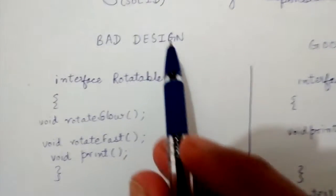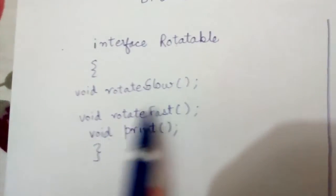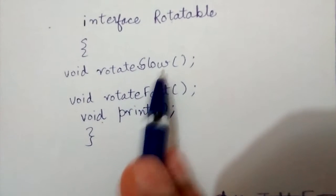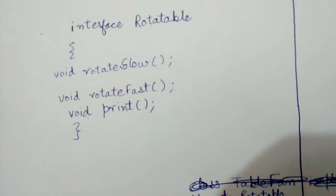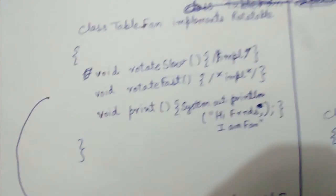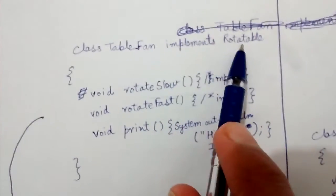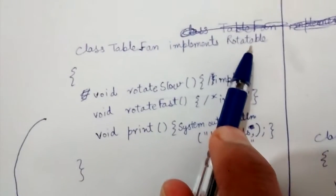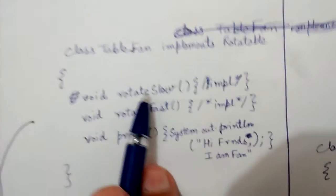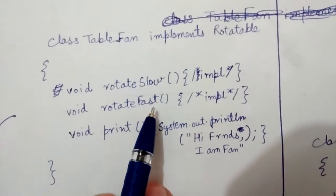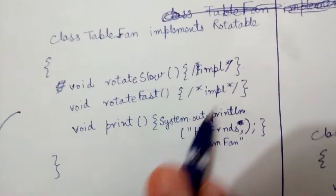So let's look at the bad design first. So this is an interface called Rotatable. Here are three methods: rotate slow, rotate fast, and print — it is declaring all three of them. Here is a class TableFan which is implementing this interface and hence it has to give a definition for each of these three methods, so it is providing the implementation for each of them.